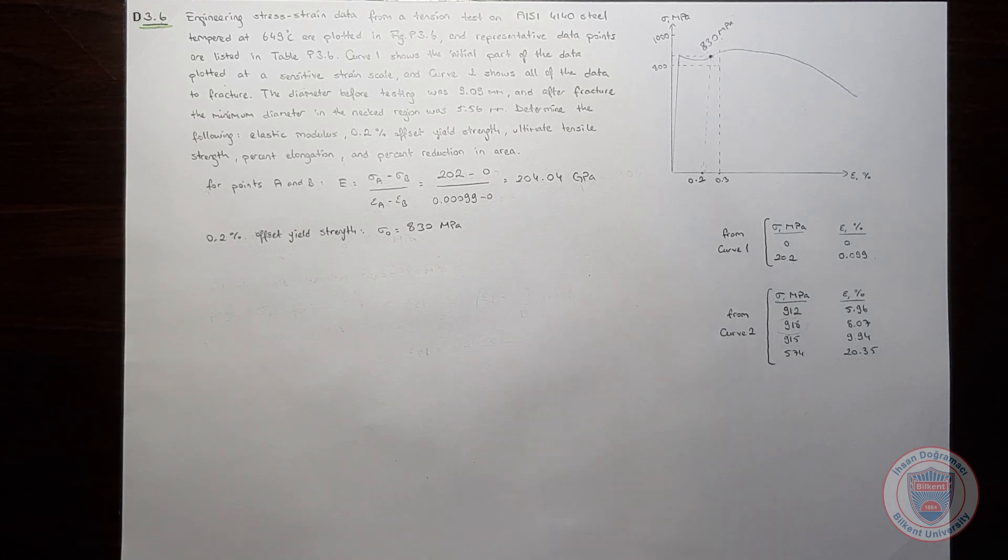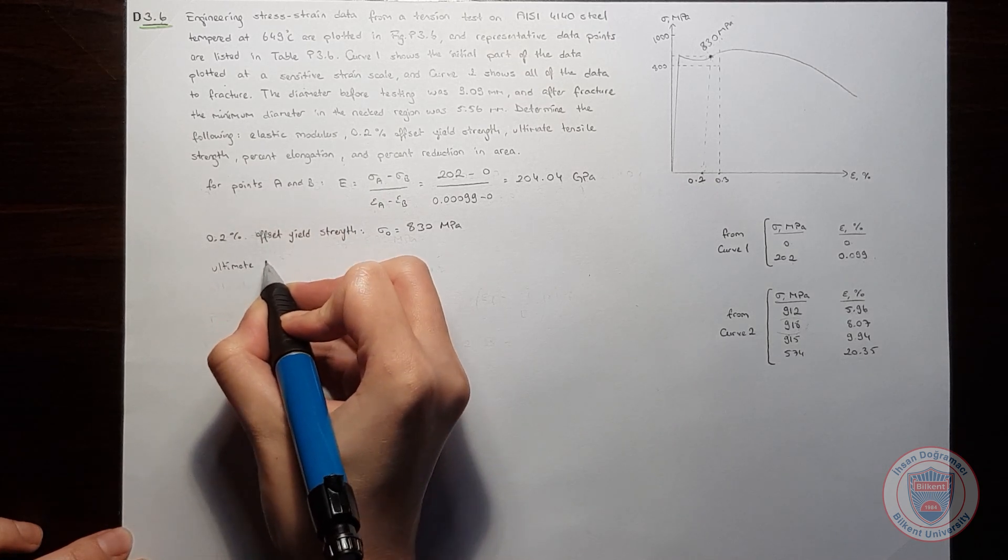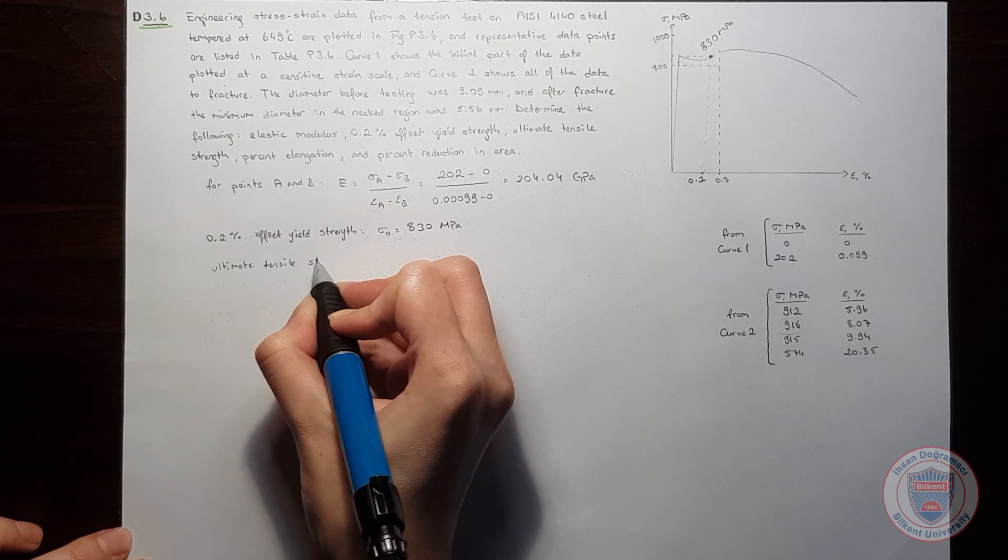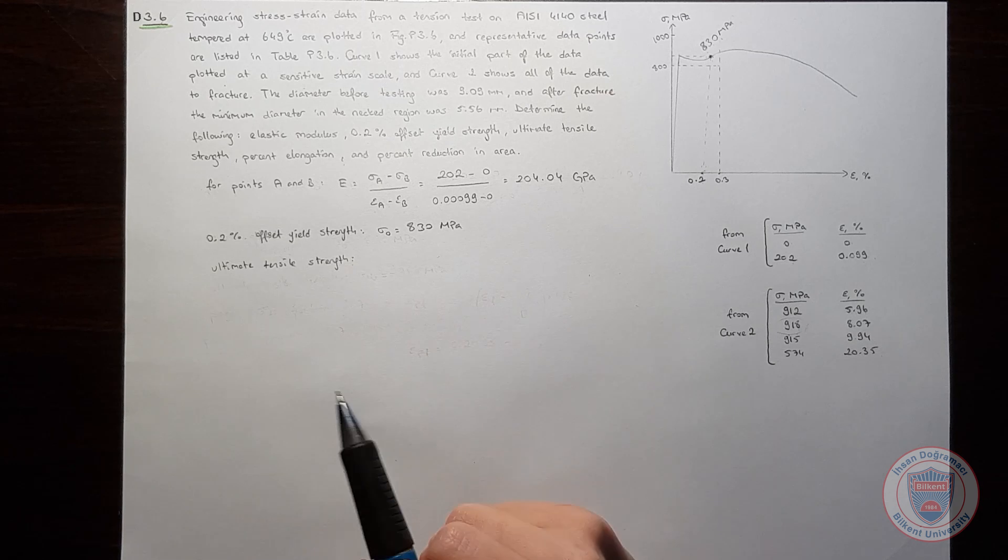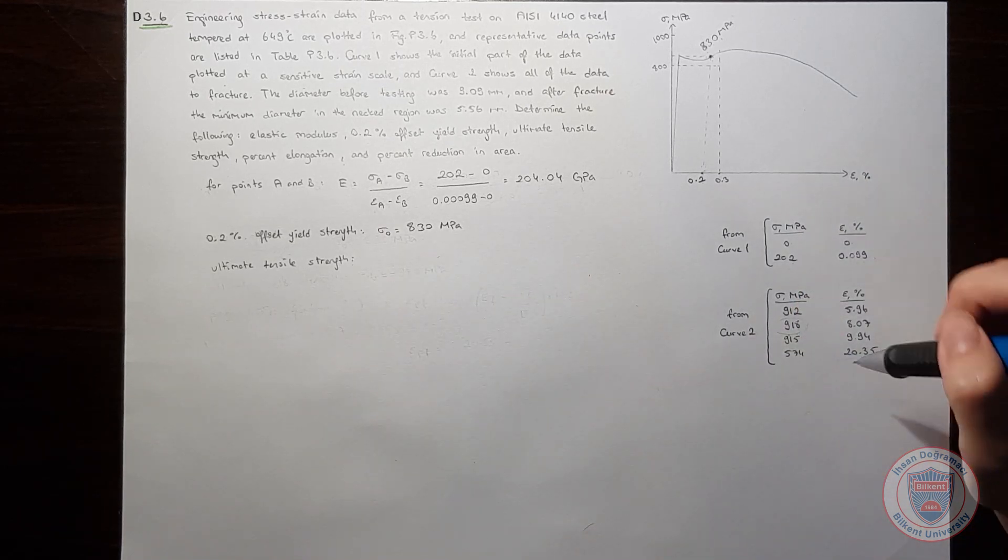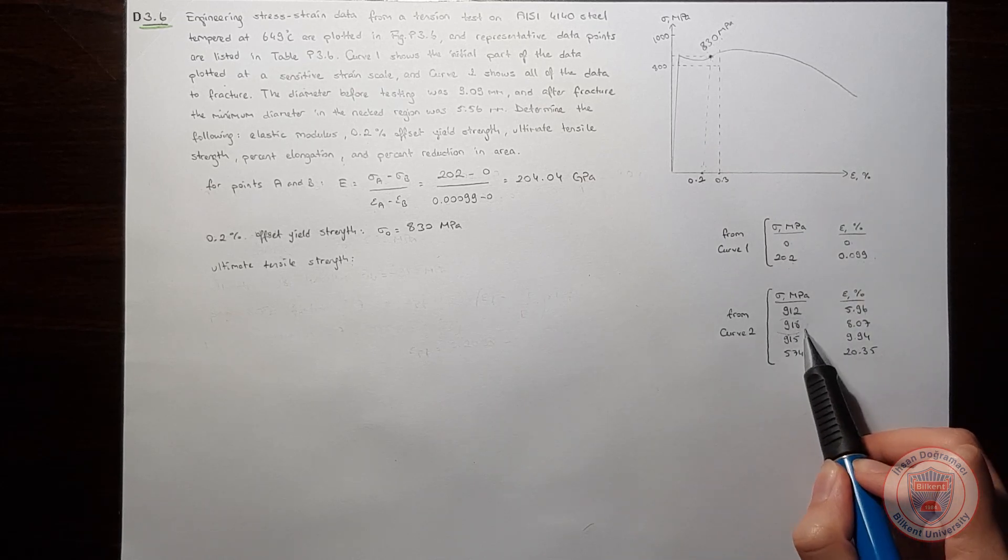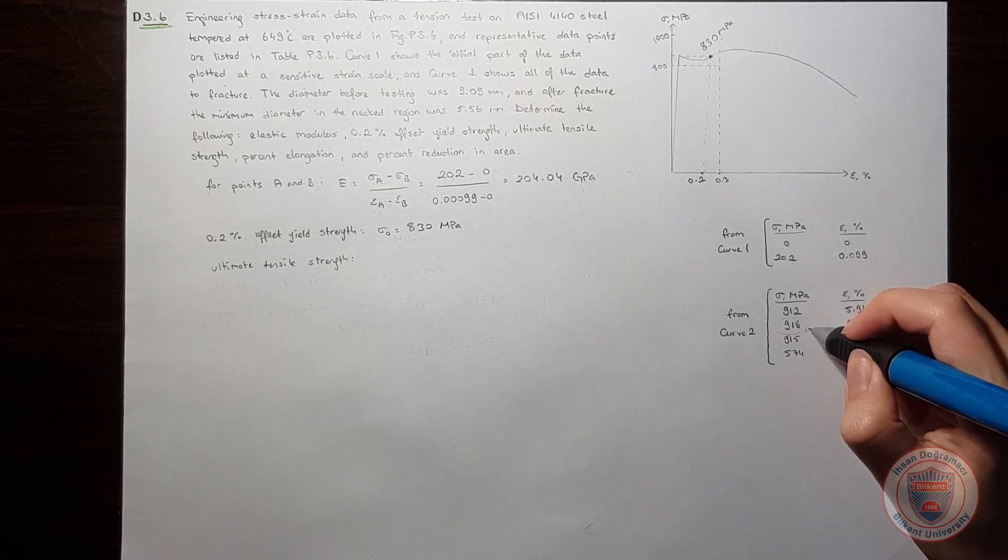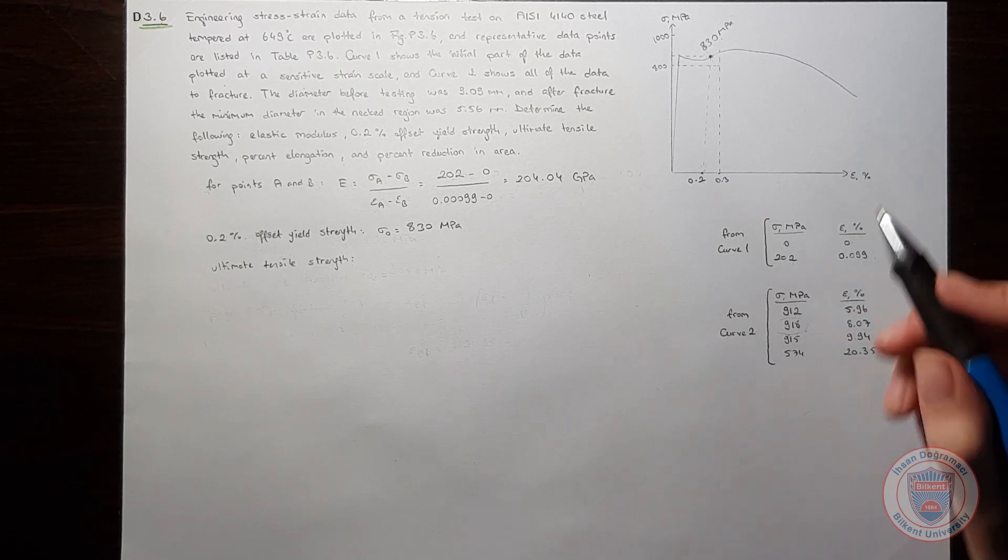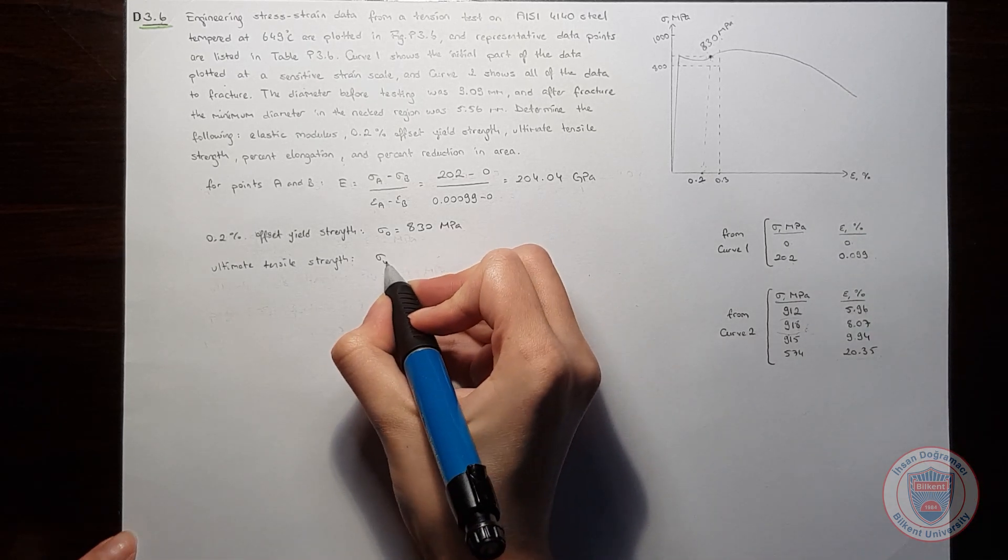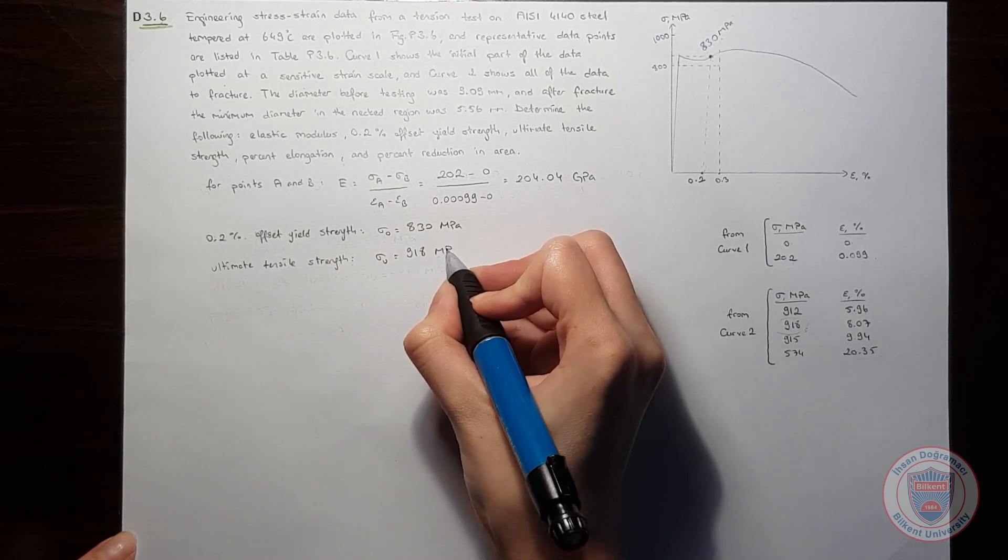So we can talk about the ultimate tensile strength now. To find the ultimate tensile strength, we need to look for the maximum stress value in the data. And when we look at the data, we see that 918 is the maximum stress value, and it is the point where necking starts. We will take this as the ultimate tensile strength value.